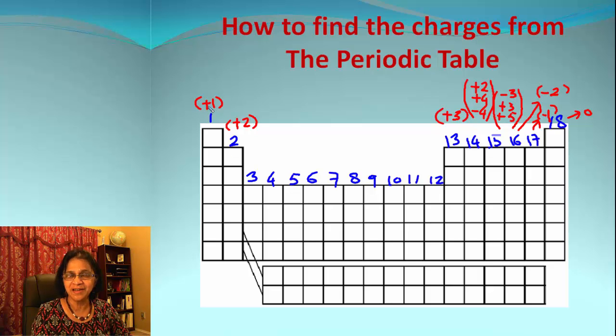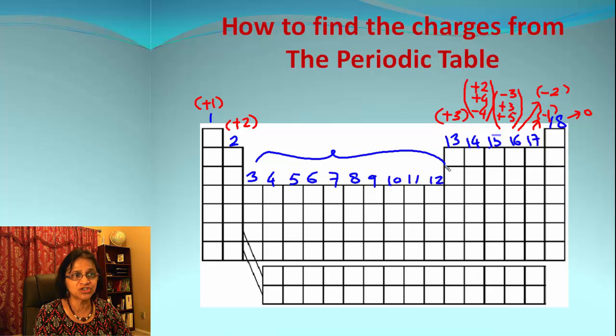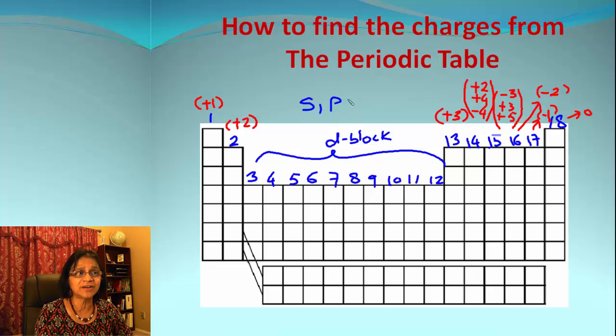Now we are not going to consider right now the charges on group 3 to 12, which are d-block elements. We'll talk about that later on. So when we go to group number 13, same story. It will try to lose only three electrons.